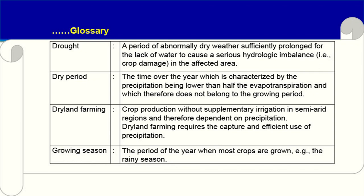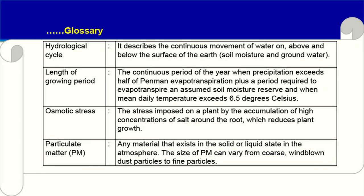Growing season: the period of the year when most crops are grown — the rainy season under dry land conditions. Hydrological cycle: describes the continuous movement of water on, above, and below the surface of the earth. Length of growing period: the continuous period when precipitation exceeds half of Penman evapotranspiration, plus a period to evapotranspire the assumed soil moisture reserve, when mean daily temperature exceeds 6.5°C. Osmotic stress: the stress imposed on a plant by accumulation of high salt concentration around the root, which reduces plant growth.